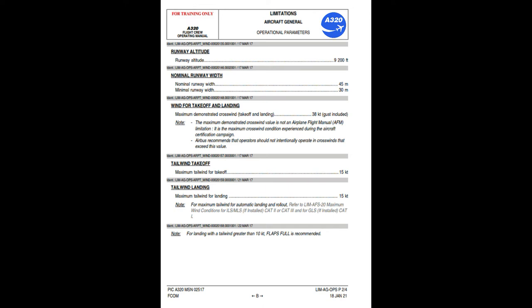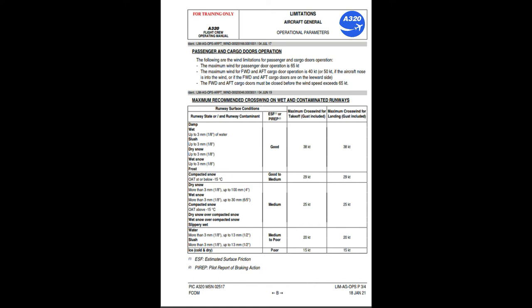For maximum tailwind for automatic landing and rollout, refer to LIM-AFS-20. Maximum wind conditions for ILS/MLS if installed CAT 2 or CAT 3, and for GLS if installed CAT 1. Note: for landing with a tailwind greater than 10 knots, flaps full is recommended. Maximum wind for passenger door operation is 65 knots. Maximum wind for forward and aft cargo door operation is 40 knots, or 50 knots if the aircraft nose is into the wind or if the forward and aft cargo doors are on the leeward side. The forward and aft cargo doors must be closed before wind speed exceeds 65 knots.